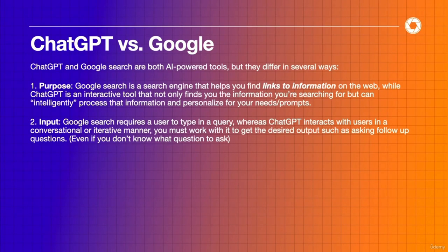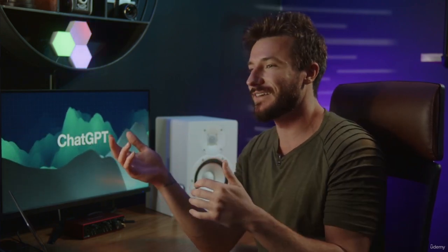A Google search requires a user to type in a specific query, whereas ChatGPT interacts in a conversational and iterative manner. You get to work with ChatGPT to get your desired output by asking follow-up questions, even if you don't know the right question to ask. You can literally ask ChatGPT what question you should ask to get better at something, or what trends should I know about for my online cooking business — it'll tell you what you should know before you even know you don't know it.